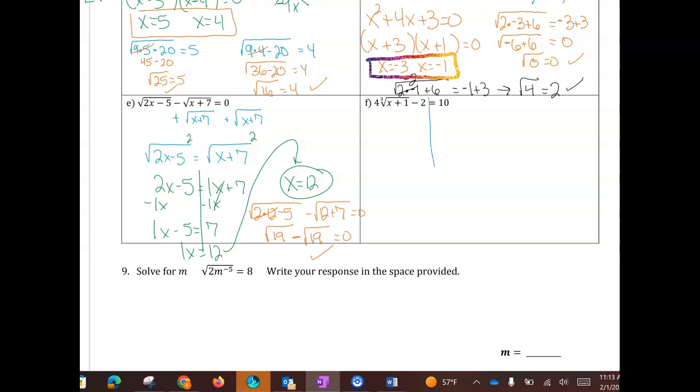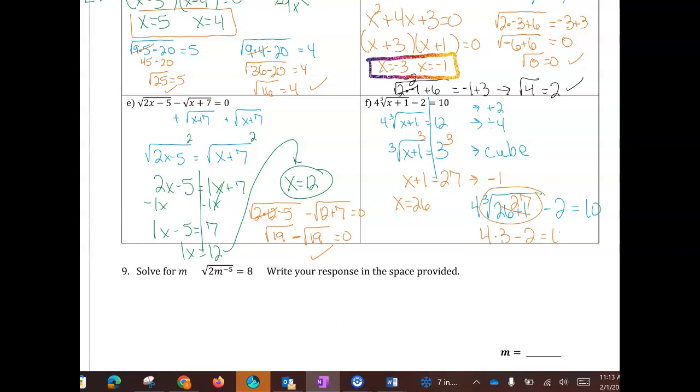Our last problem. I'm going to work backwards. First I'm going to add the 2 over, then I'm going to divide by 4. And now I will cube both sides. So cube it, cube it. Now I'll just subtract 1, and x is 26. Let's see if 26 really works. So here we go. 4 cubed root, 26 plus 1. Just so you know, we really don't have to check because cube roots are good. But 26 plus 1 is 27, then I can take the cubed root of 27, which is 3, and then multiply. Yes, 12 take away 2 is 10. So we do have another answer.